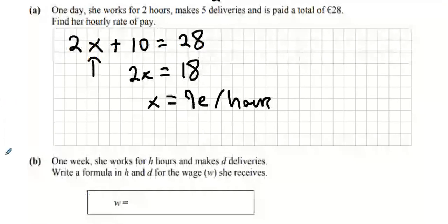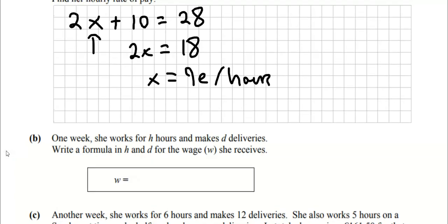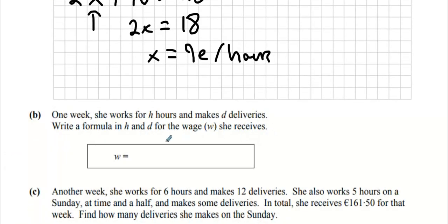Part B: One week she works H hours and makes D deliveries. Write a formula in H and D for the wage she receives. Her wage is 9 multiplied by the number of hours she works, 9 times H, and then 2 euro multiplied by the amount of deliveries. 9H plus 2D.